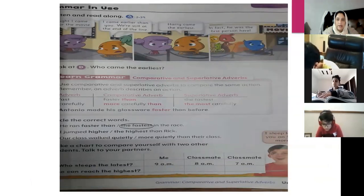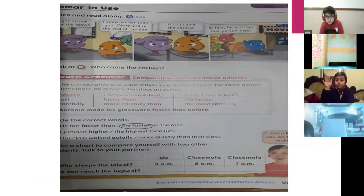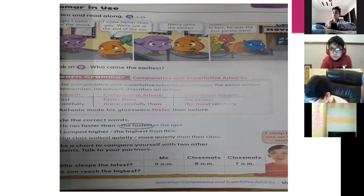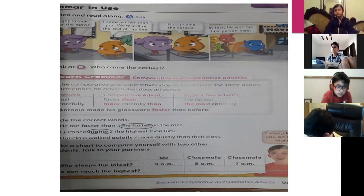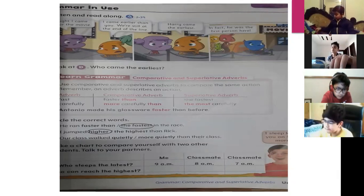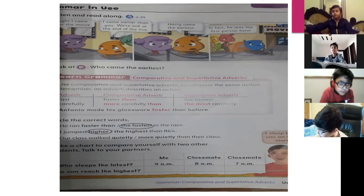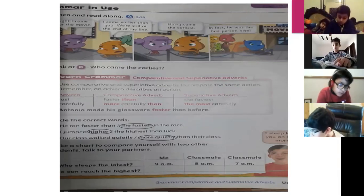'I jumped ___ than Rick' — 'higher than Rick' or 'the highest than Rick'? I jumped higher than Rick, because here two actions and two persons — I and Rick — are being compared. 'Our class walked ___ than their class' — our class walked more quietly than their class.